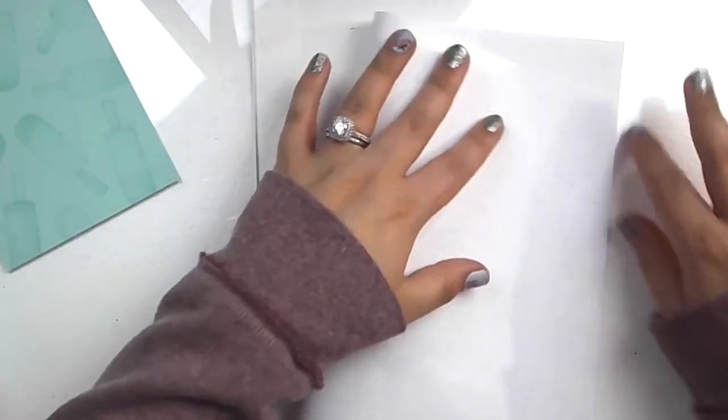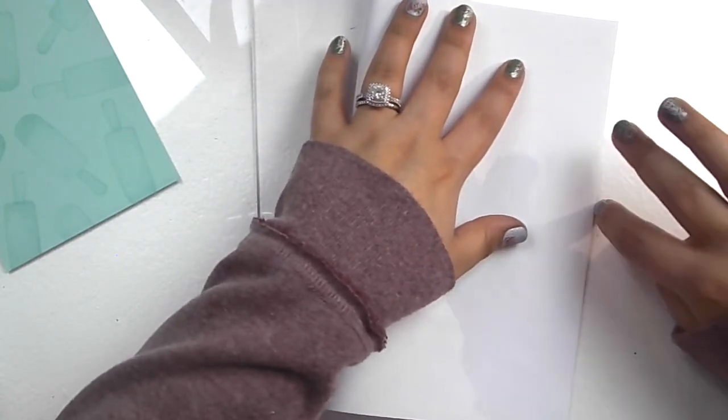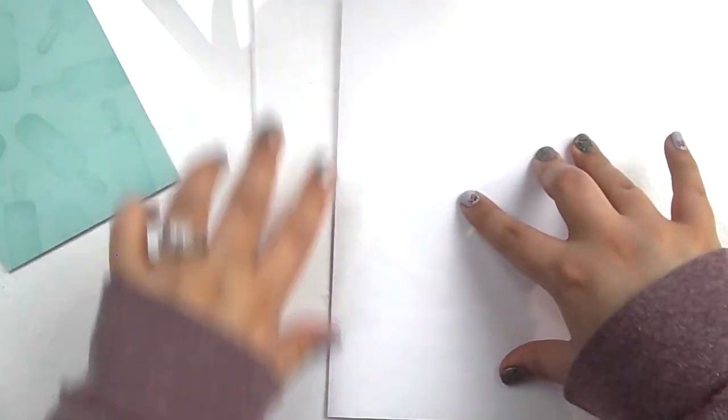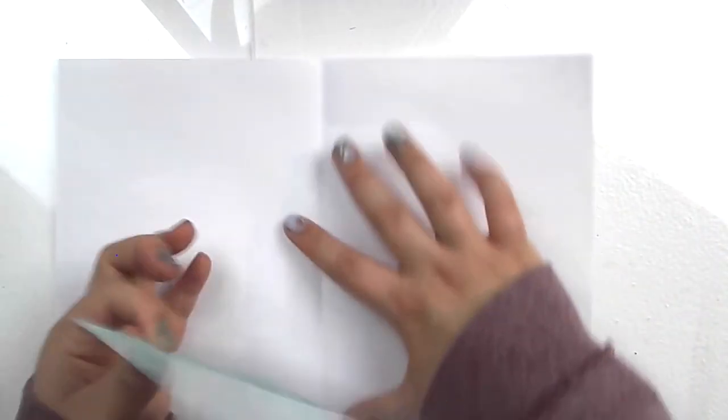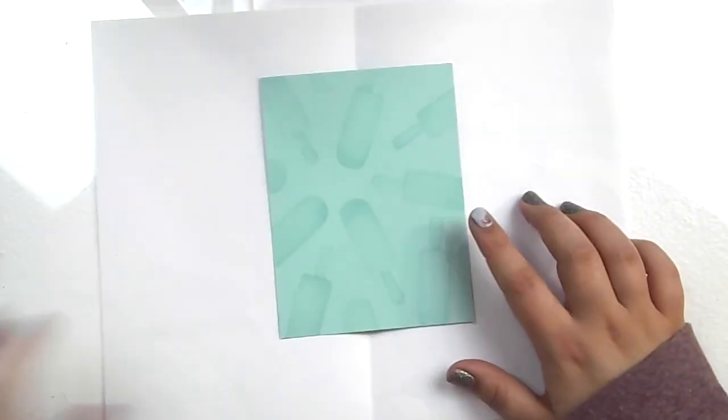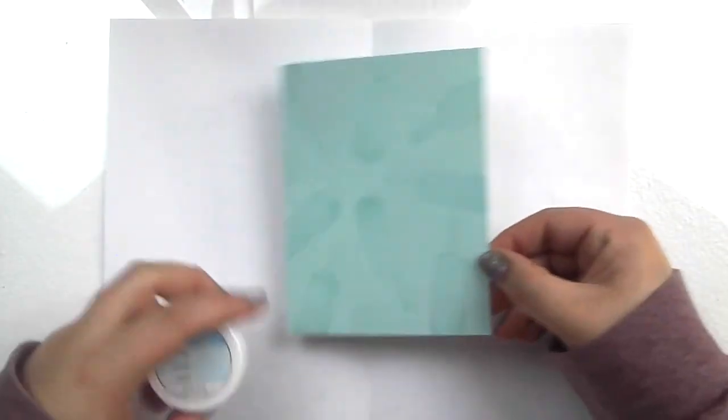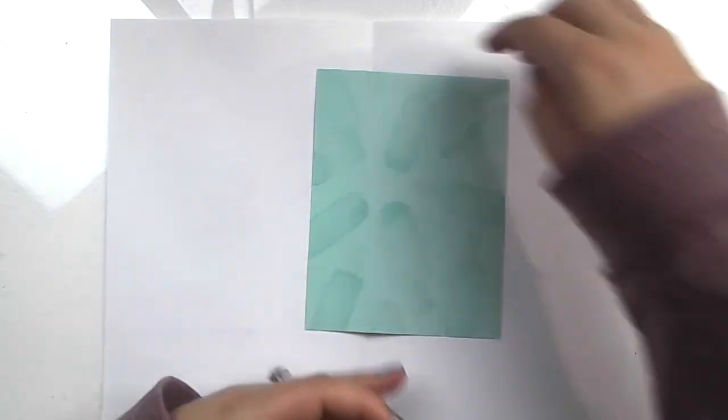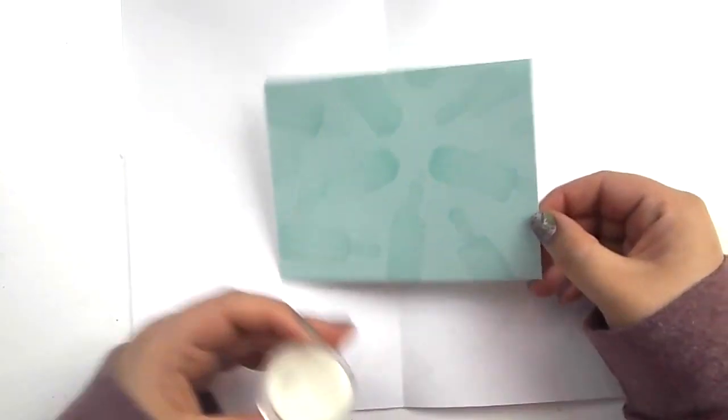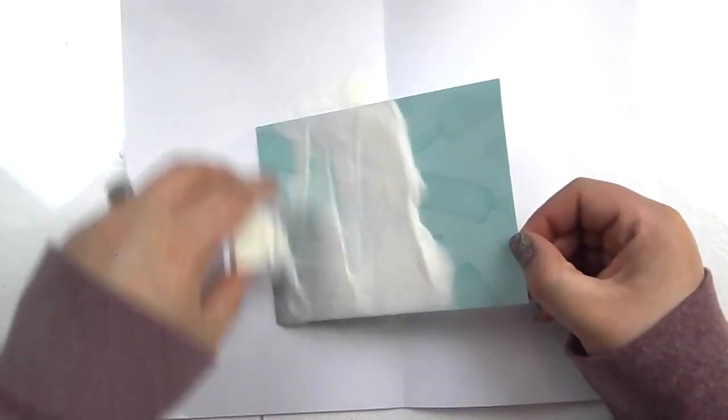So I'm actually going to scoot that off to the side and fold my piece of paper in half. This is just a background piece that I was using to stamp off on, but now we're going to emboss. So I'm going to put our piece of paper or background piece on here.